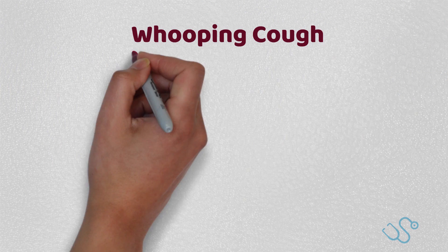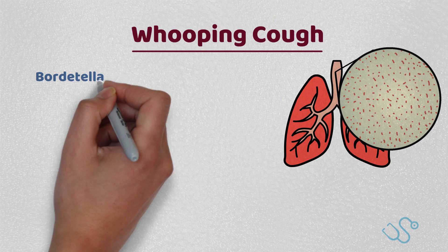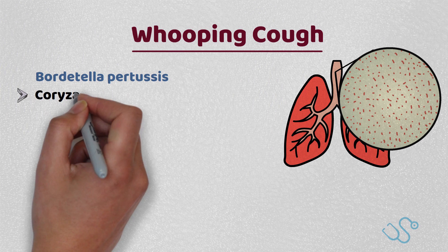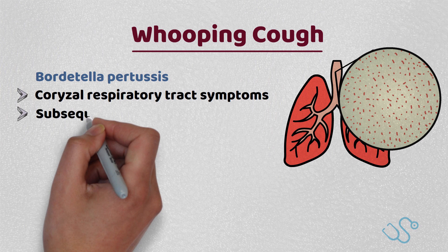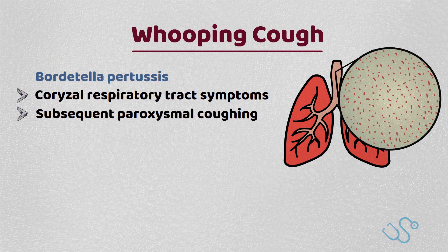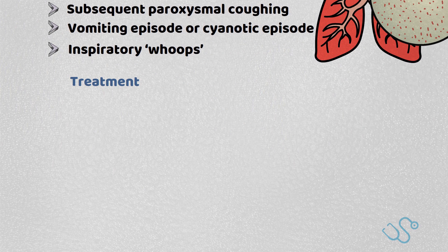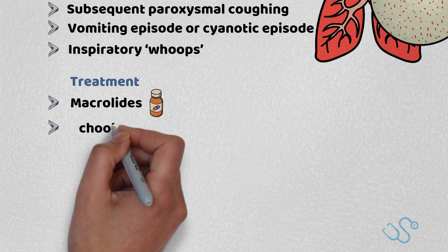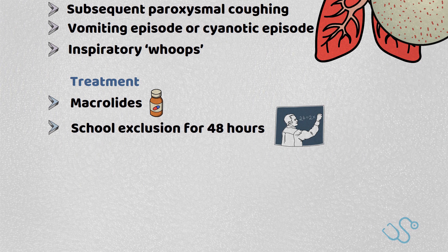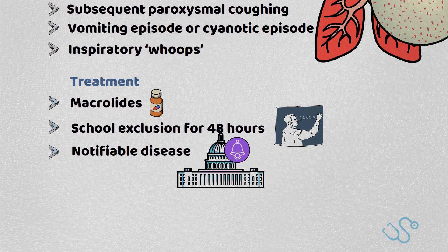Whooping cough is typically caused by the Bordetella pertussis bacteria, with children often having coryza respiratory tract symptoms with subsequent paroxysmal coughing bouts that often end in a vomiting or cyanotic episode, interspersed with inspiratory whoops. PCR or serology is advised for diagnosis, however treatment is often commenced prior to results with macrolides first line, and household contacts should also be offered treatment. Children are advised to avoid school until 48 hours after starting antibiotics, and it is a notifiable disease.